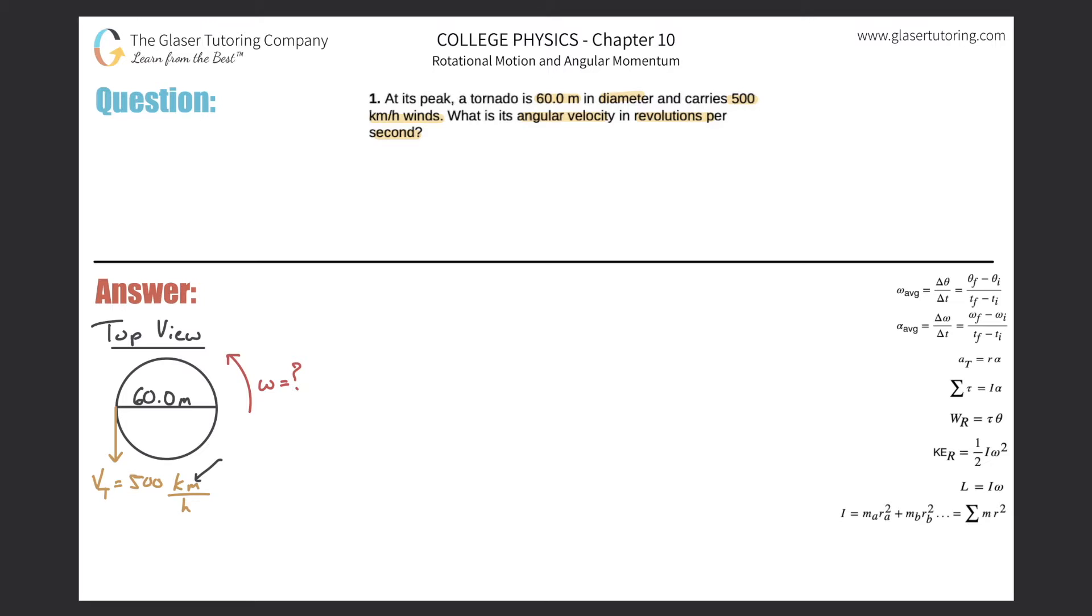Now knowing that this is a linear distance over time, I know that the given information has to be some linear velocity, and therefore relating it to circular motion it would be the tangential velocity. Okay, I already noticed that these units, I need them in meters per second.